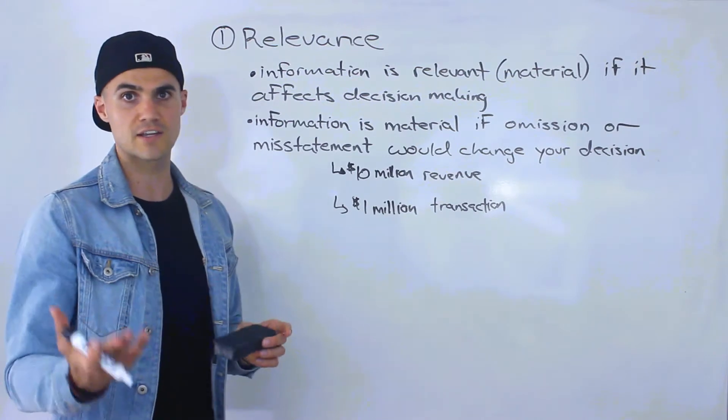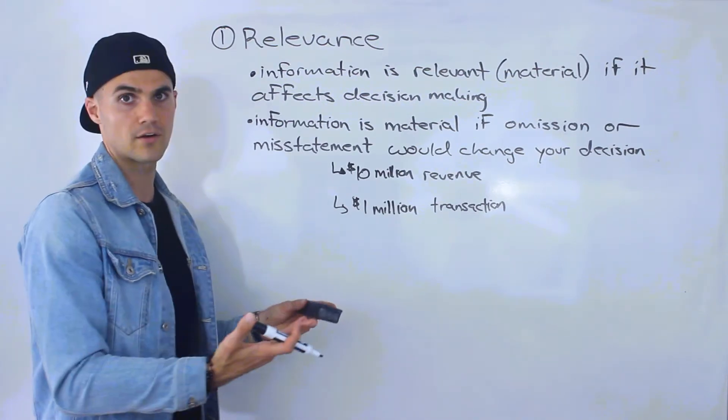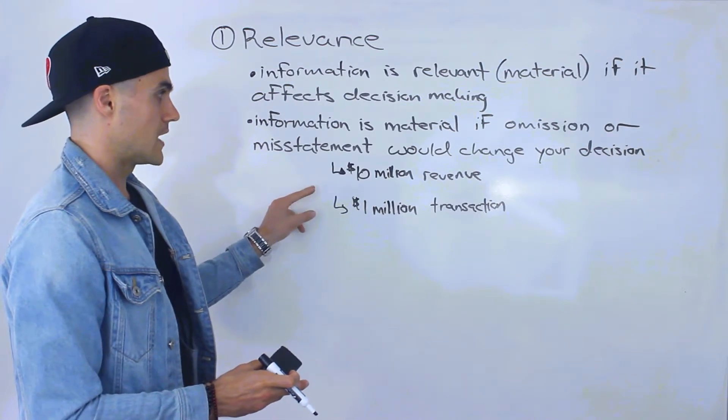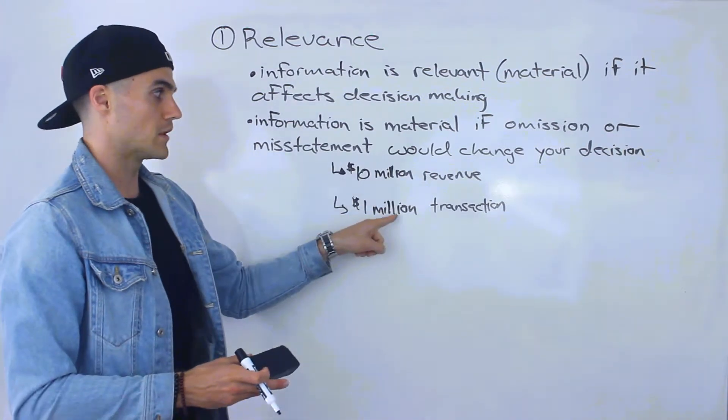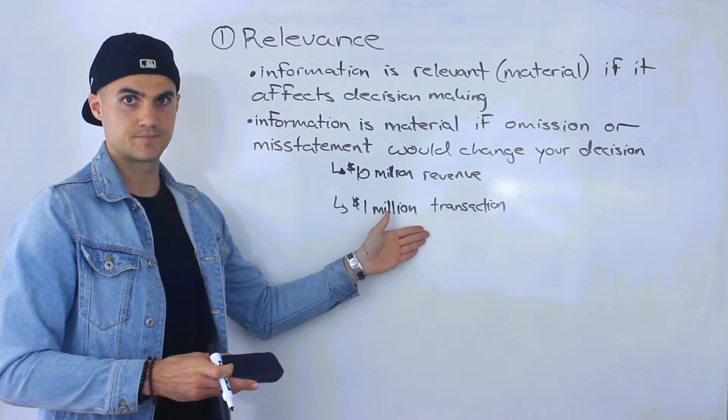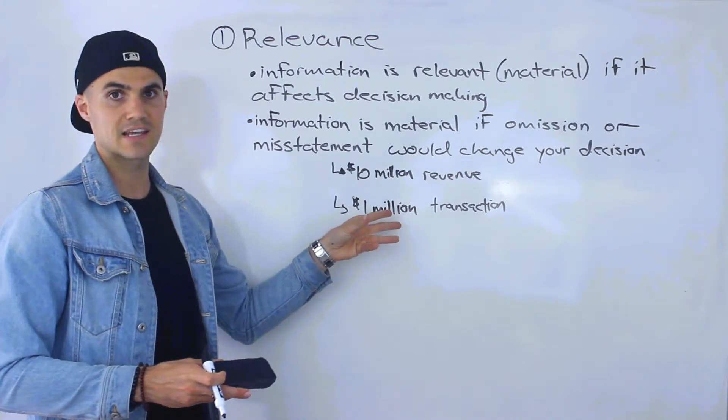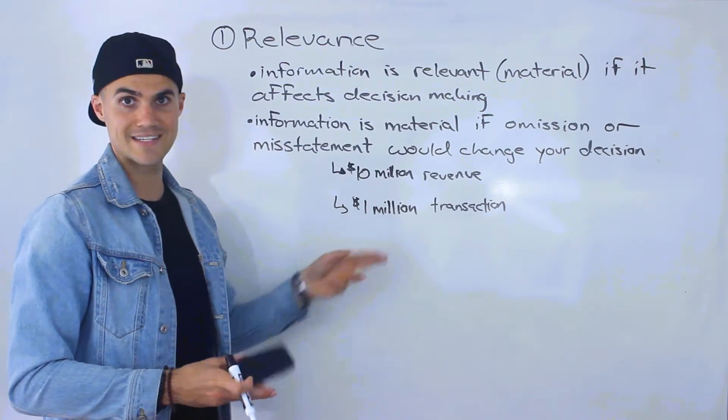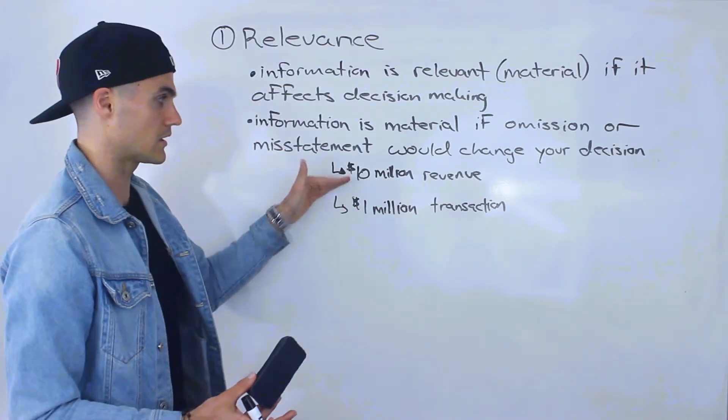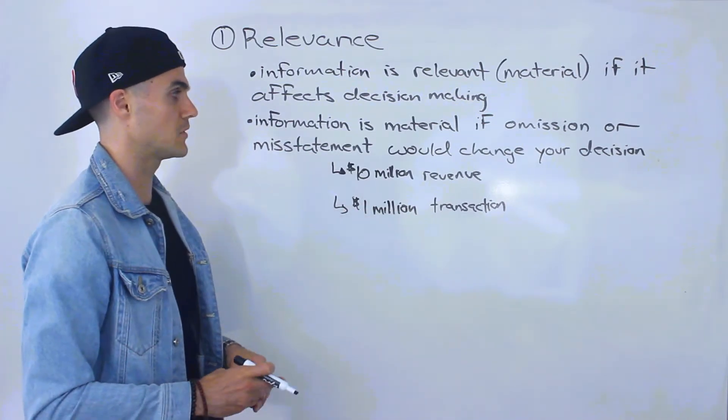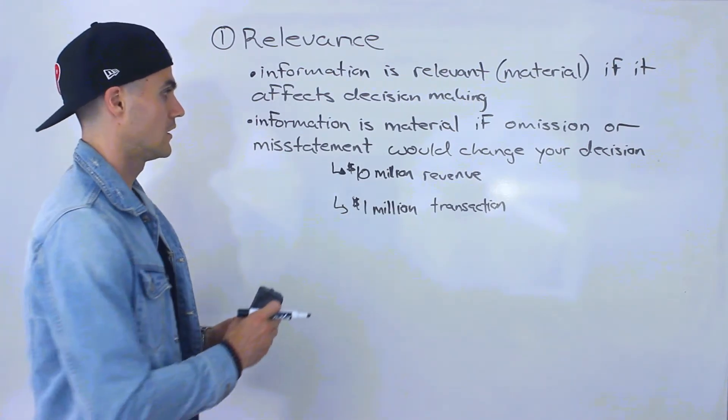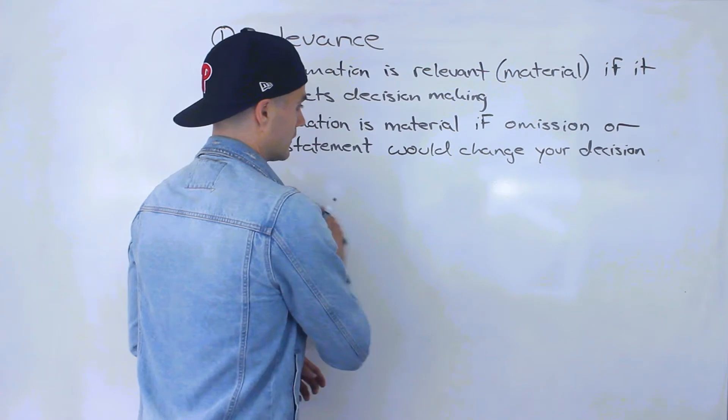It doesn't have to just be an investor again. It could be even a creditor. So this company, if they omitted a $1 million expense, a bank that's thinking about lending money to this company, that would be a big deal. They would want to see that expense because $1 million is a larger chunk of $10 million. It's material information. So that's what materiality is.